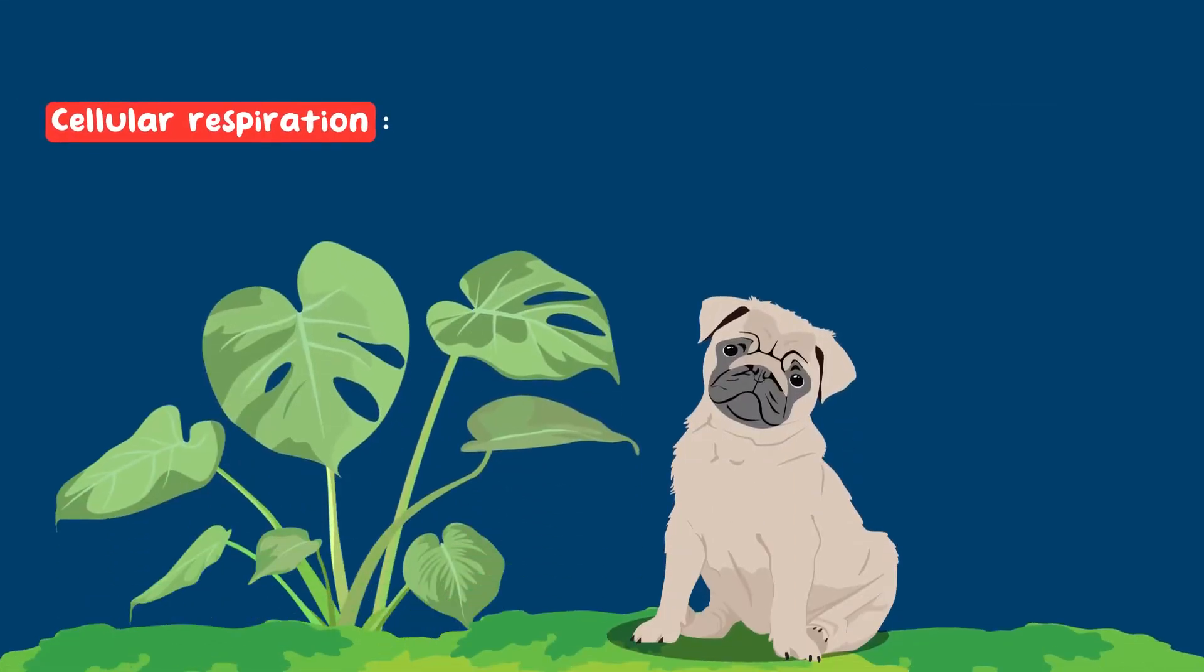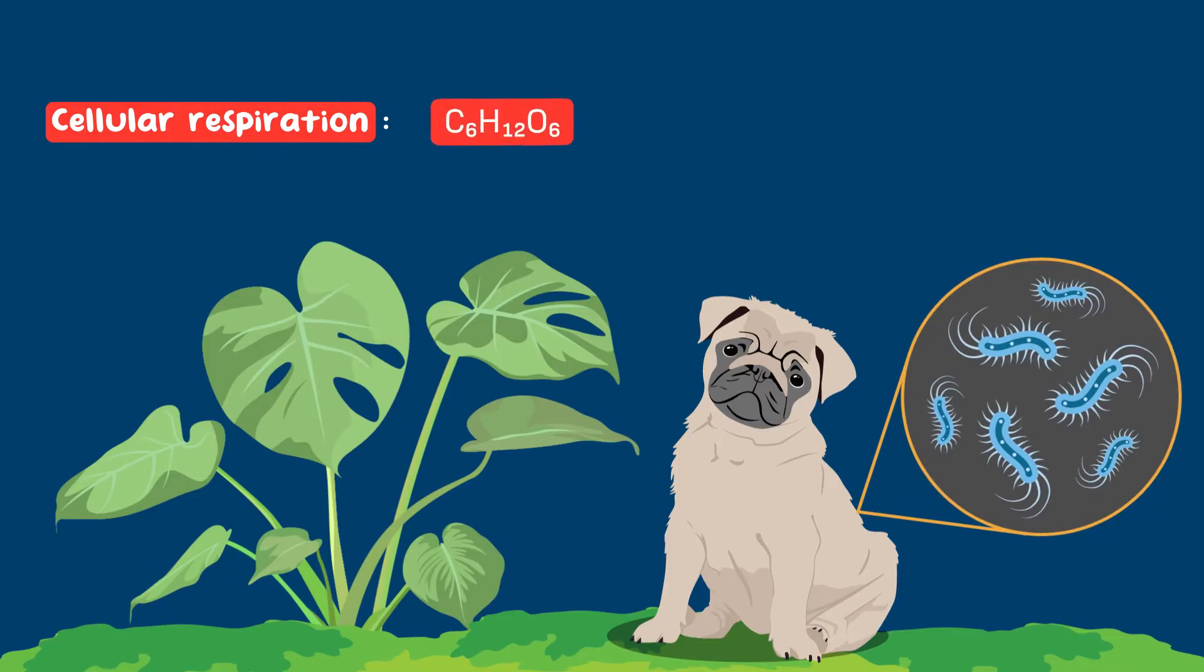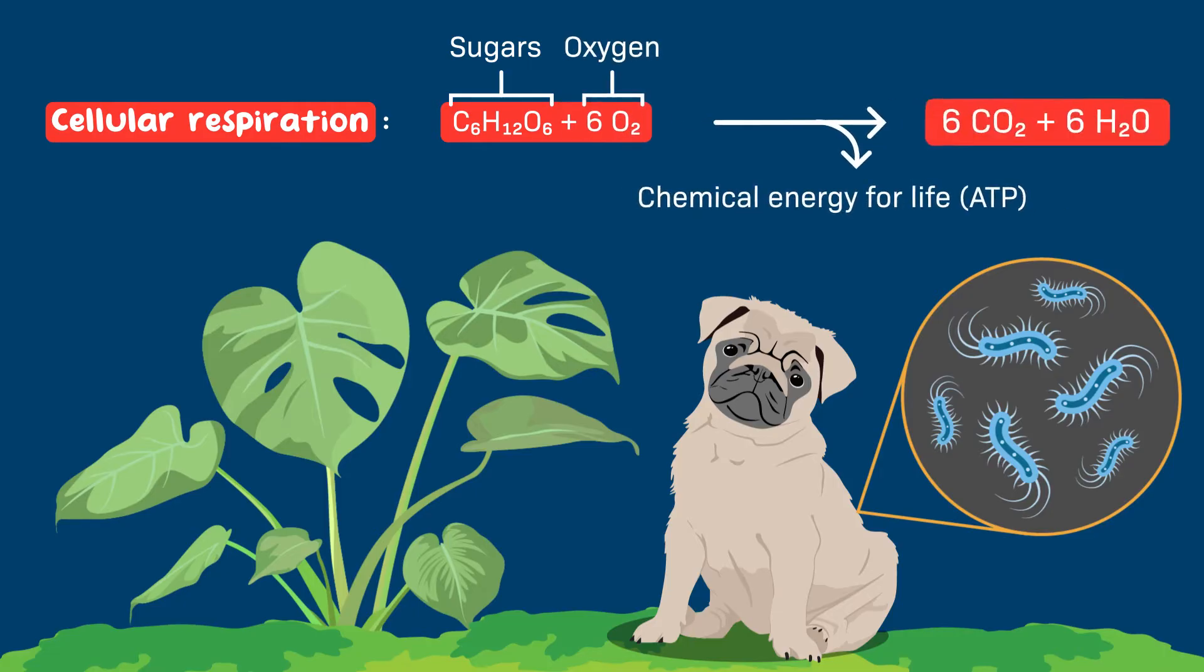In cellular respiration, which all living organisms do, glucose sugars are broken down to make their stored energy available to the cell. Oxygen is used up in this process, and carbon dioxide and water are released along the way.